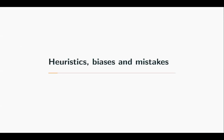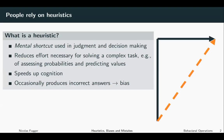In this lecture we will talk about heuristics, biases, and mistakes. There is a lot of evidence that people frequently rely on heuristics. A heuristic is a mental shortcut used in judgment and decision making — you can also think of it as a rule of thumb. This heuristic reduces the effort necessary for solving a complex task.